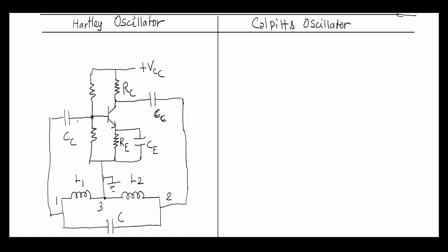Remember that there is no external input given to the oscillator — only the output of the amplifier is fed back to the input side. An oscillator is basically an amplifier that works without an external input. Before seeing the working principle, let us draw the circuit for the Colpitts oscillator. The basic circuit is the same: a common emitter amplifier with self-bias.